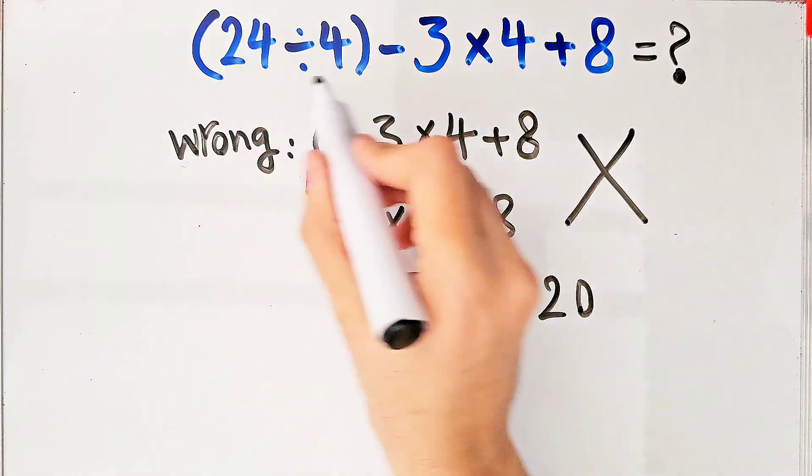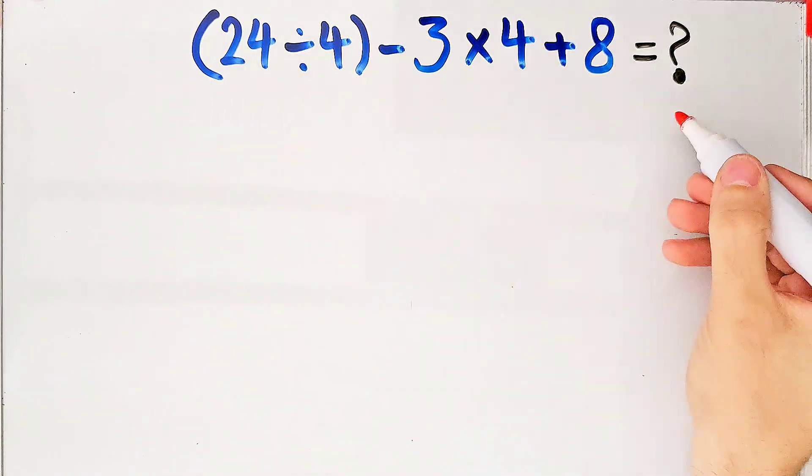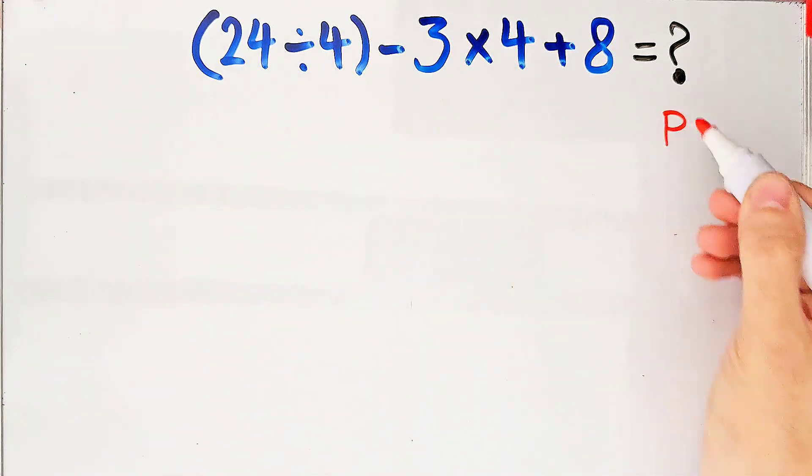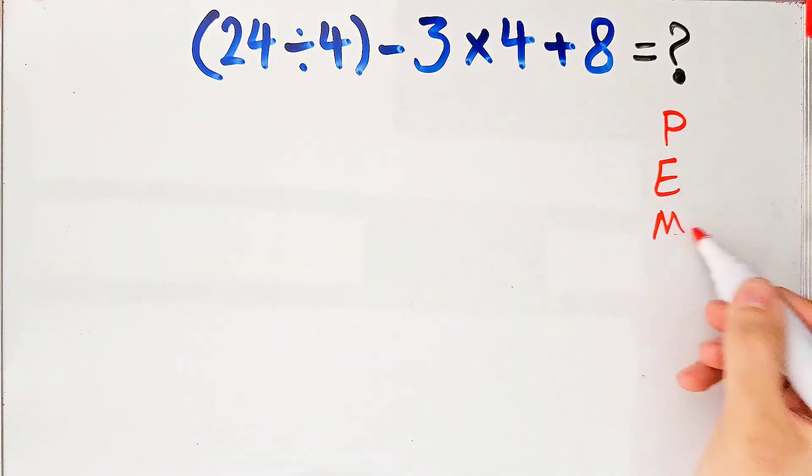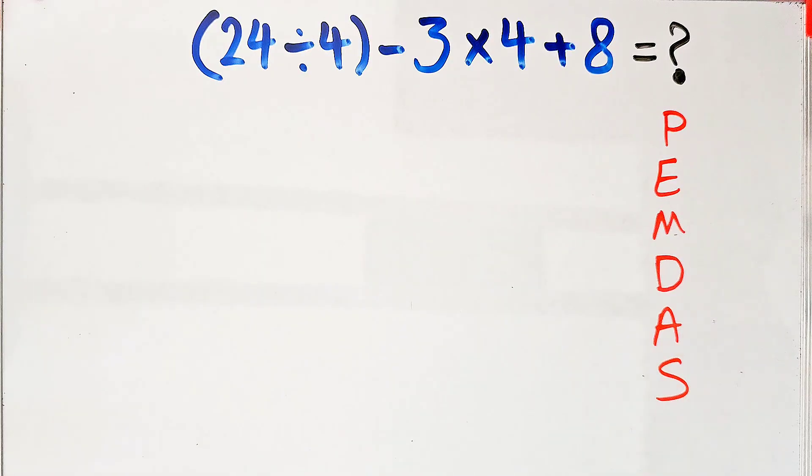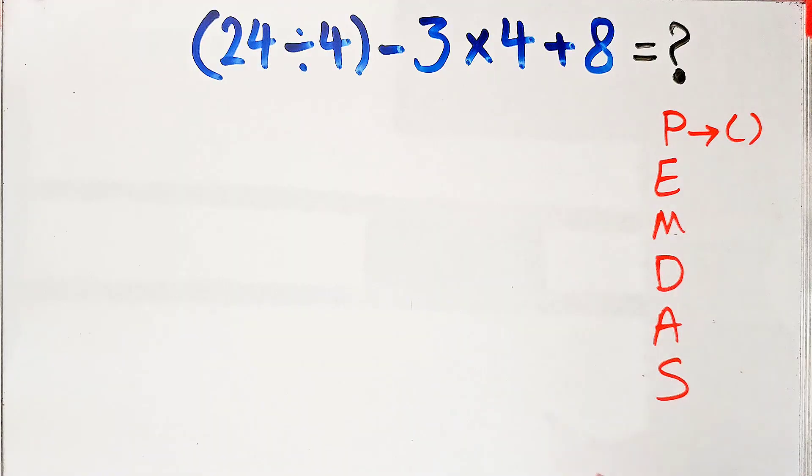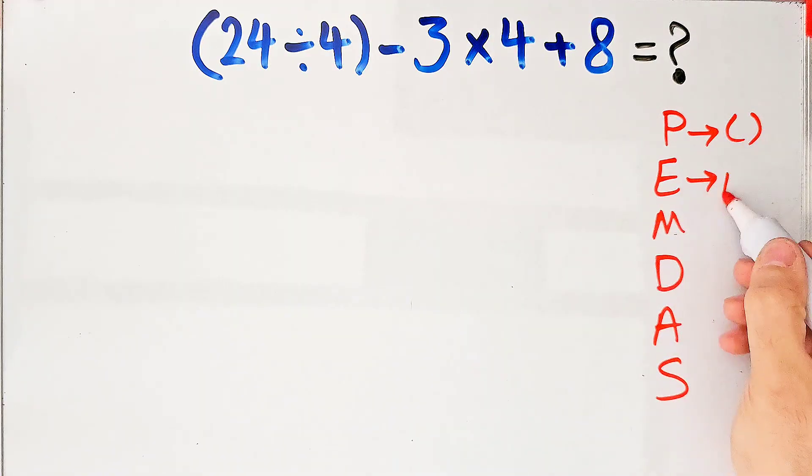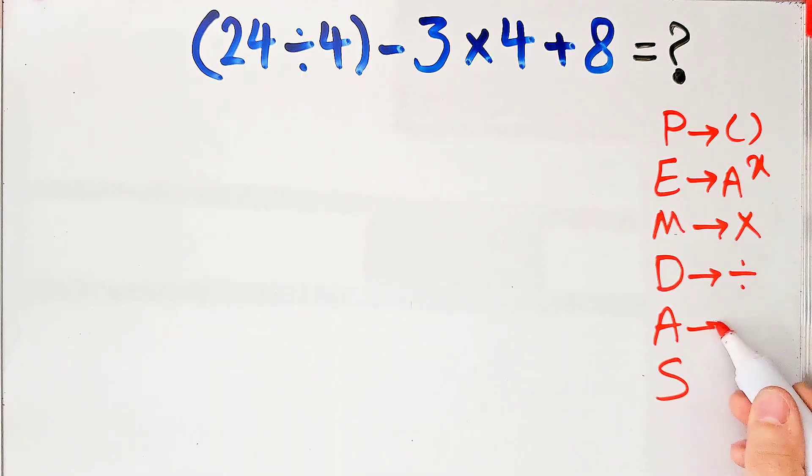Let's solve this question step by step together. To solve this question, we need to follow the order of operations, which is PEMDAS. PEMDAS shows the priority of the mathematical operations, and if you don't pay attention to this rule, you get the wrong answer.